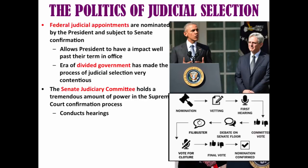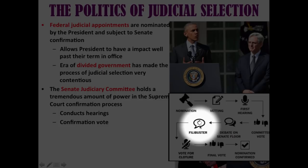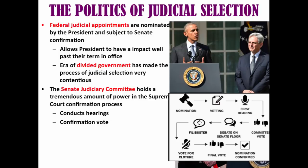Once the nominee gets past the committee, there is debate on the Senate floor. In the past, if the president's party had fewer than 60 seats, the opposition could try to filibuster the nominee. The rules have recently changed — the confirmation vote was changed to a simple majority to end a Democratic filibuster of Trump's nominee Neil Gorsuch. Now all that is needed is a simple majority of 51 votes.